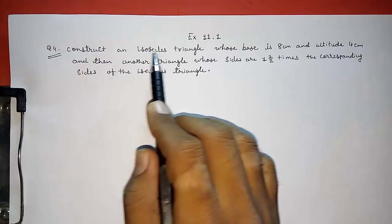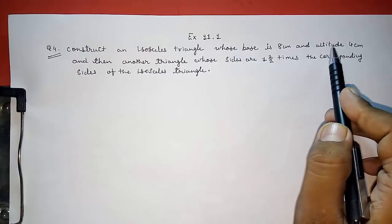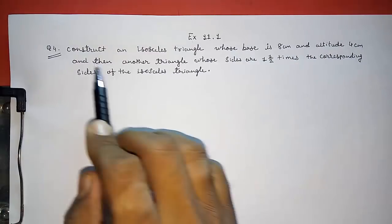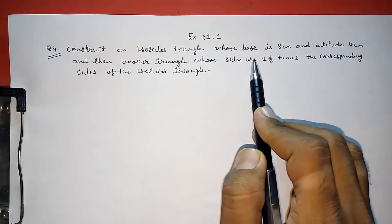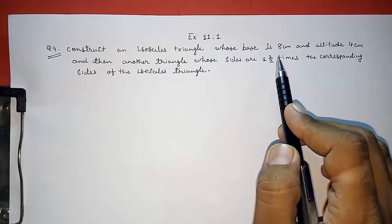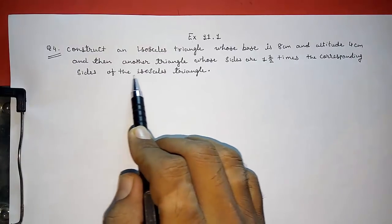Construct an isosceles triangle whose base is 8 cm and altitude 4 cm and then another triangle whose sides are 1½ times the corresponding sides of the isosceles triangle.